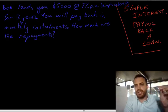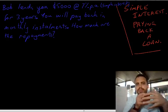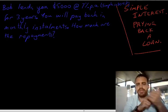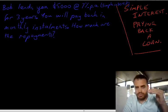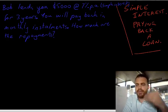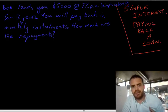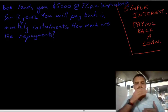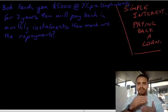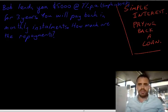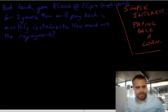Monthly installments happen a lot with loans, because people get a little scared. You can imagine that if Bob lends you $5,000 and says pay me back in three years, two and a half years could go by and you decide to move to Mexico and he never sees you again. So Bob wants his money back in small increments, so if you change your mind after two and a half years, at least Bob's gotten most of his money back. That's why we do monthly installments.